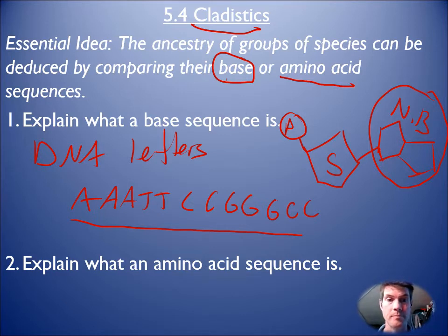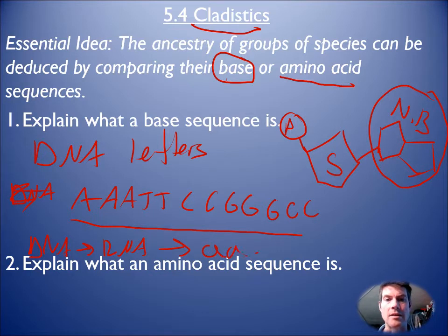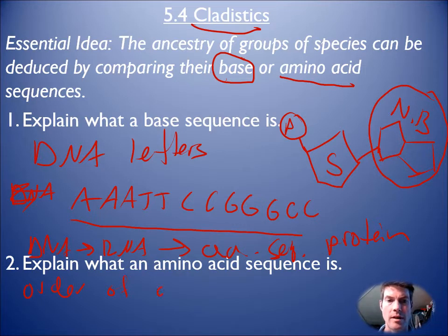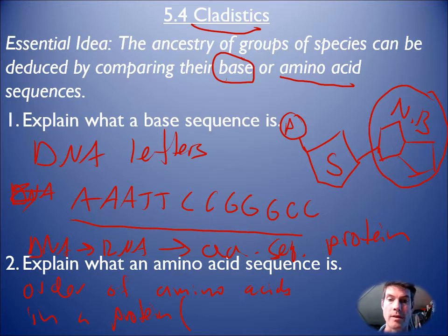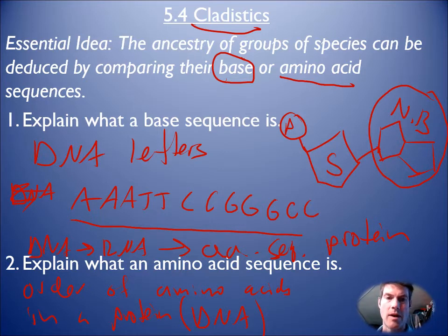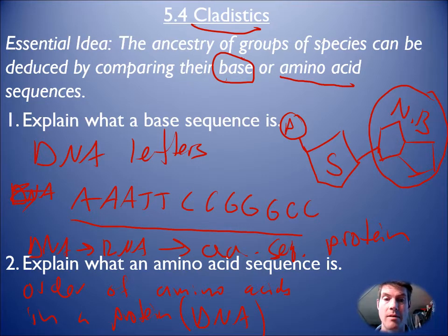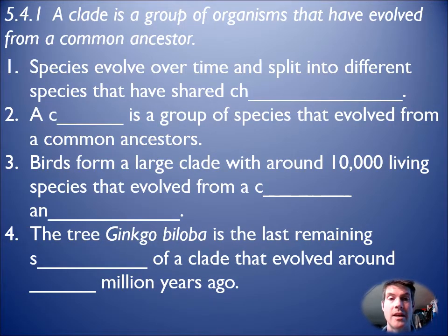Amino acid sequences — remember, DNA gets converted into RNA, which then converts into an amino acid sequence, also known as a protein eventually. So amino acid sequences are the order of amino acids in a protein. That order depends on the DNA, so the amino acid sequence and the DNA sequence are linked pretty closely. You can actually have some differences in your DNA and still have the same amino acid sequence, because mutations in the base sequence don't always change the protein.